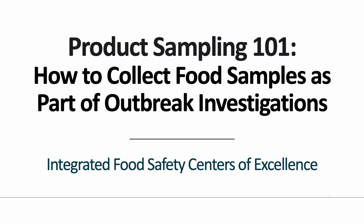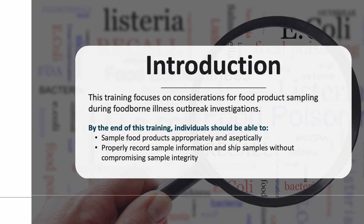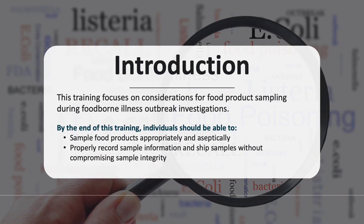Product Sampling 101 – How to Collect Food Samples as Part of Outbreak Investigations. This training focuses on considerations for food product sampling during foodborne illness outbreak investigations. By the end of this training, individuals should be able to sample food products appropriately and aseptically, properly record sample information, and ship samples to laboratories for product testing without compromising sample integrity.